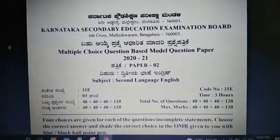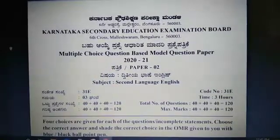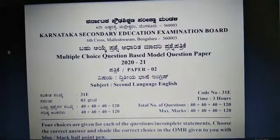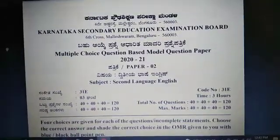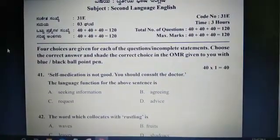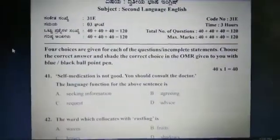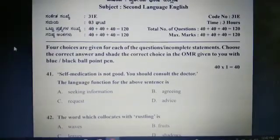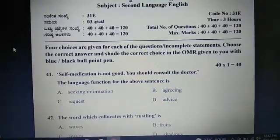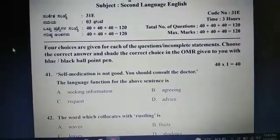Four choices are given for each of the questions or incomplete statements. Choose the correct answer and shade the correct choice in the OMR given to you with blue or black ballpoint pen. Question 41: Self-medication is not good. You should consult the doctor. The language function for the above sentence is D: Advice. Question 42: The word which collocates with 'rustling' is C: Leaves.